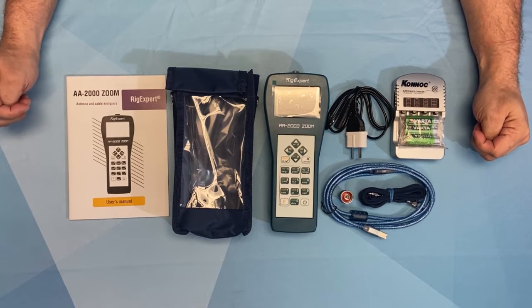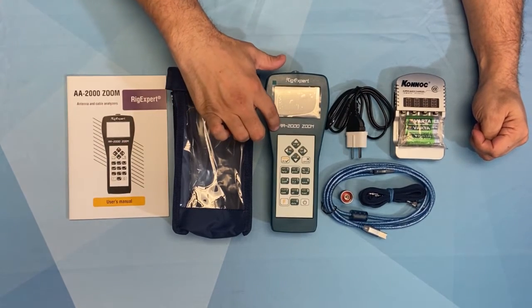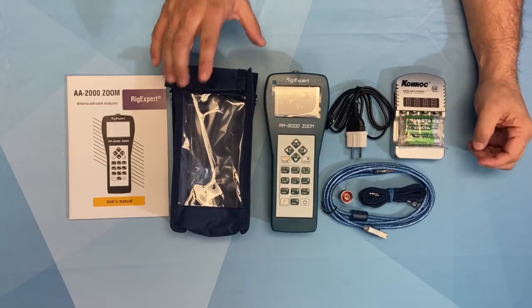So what is inside the box for the AA-2000 Zoom? Of course, you have your user's manual, the AA-2000 Zoom Analyzer with its own carrying case.